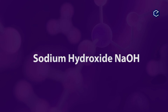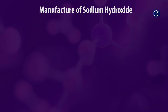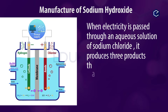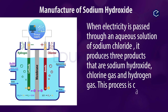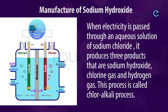First, Sodium Hydroxide (NaOH). When electricity is passed through an aqueous solution of Sodium Chloride, it produces three products: Sodium Hydroxide, Chlorine Gas, and Hydrogen Gas. This process is called the Chloralkali Process.